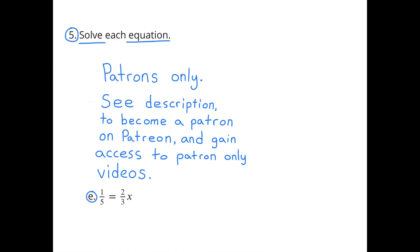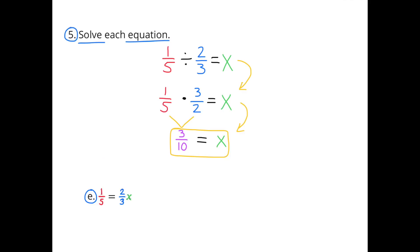E: 1 fifth equals 2 thirds x. That can be rewritten as 1 fifth divided by 2 thirds equals x. Multiplying by the reciprocal of 2 thirds: 1 fifth times 3 halves equals x, and 1 fifth times 3 halves equals 3 tenths. So x equals 3 tenths.